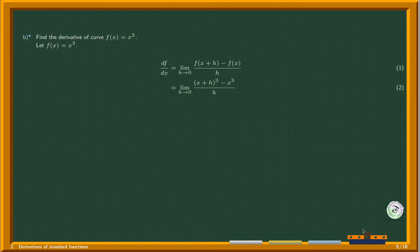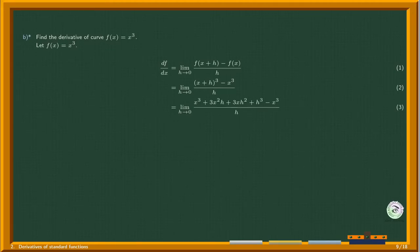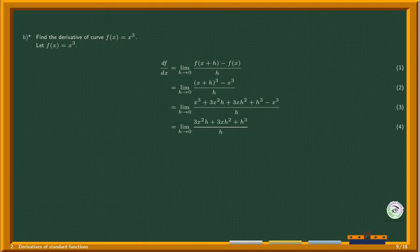Expanding (x plus h) cubed in step 2 gives step 3. You may use Pascal's triangle or the binomial theorem there. Cancelling out the x cubed terms gives step 4. Dividing each term in step 4 by h, we get step 5.